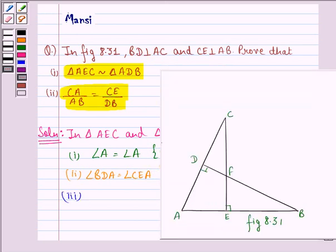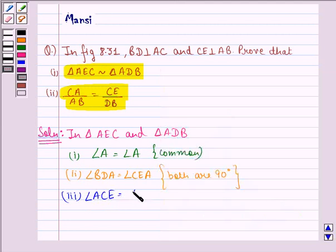And third we see that angle ACE is equal to angle ABD because this is the third angle. If two angles of one triangle are equal to corresponding two angles of other triangle, then third angle is also equal to third angle of the other triangle.